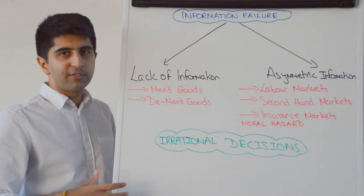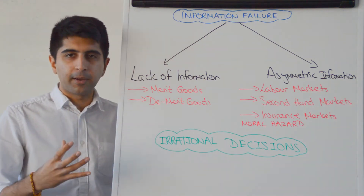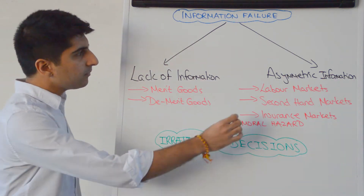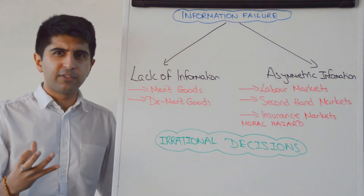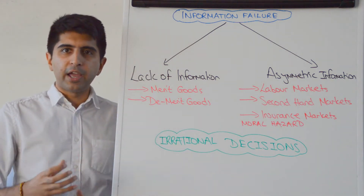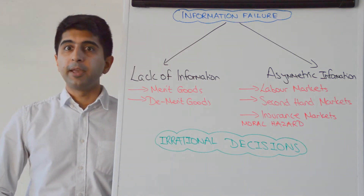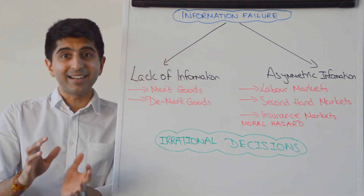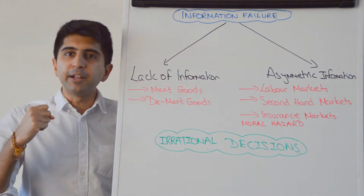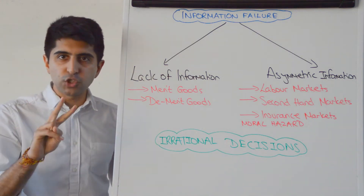So lack of information can get in the way of utility maximising according to traditional economic thought. But also asymmetric information could get in the way of utility maximisation. Asymmetric information is when the information does exist, and it exists very well — perfectly you might say — but it's not being shared equally between two parties.